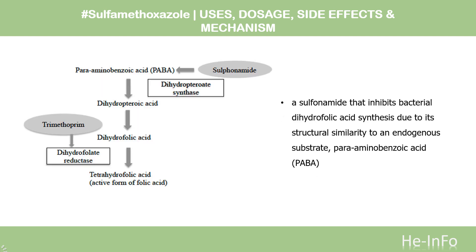Mechanism of Action: Sulfamethoxazole is a sulfonamide that inhibits bacterial dihydrofolic acid synthesis due to its structural similarity to an endogenous substrate, para-aminobenzoic acid (PABA). Most bacteria meet their need for folic acid by synthesizing it from PABA, as opposed to animals that require exogenous folic acid sources. Sulfamethoxazole competitively inhibits dihydropteroate synthase, the enzyme responsible for bacterial conversion of PABA to dihydrofolic acid.